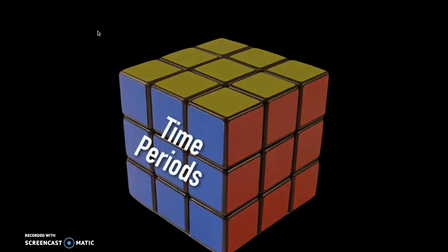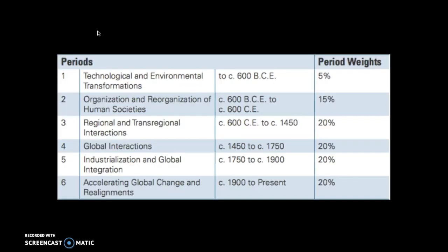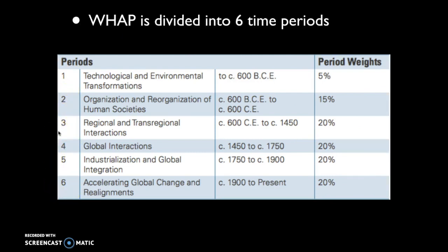One way that we break down World History is into different time periods. The College Board has broken down AP World History into six time periods, and they're all weighted a little bit differently. Period 1 is 5%, Period 2 is 15%, and all other periods — 3 through 6 — are all worth 20%. WAP is divided into six time periods through a process known as periodization that historians engage in, essentially creating a book of human history, the human story.